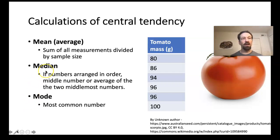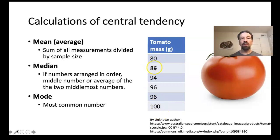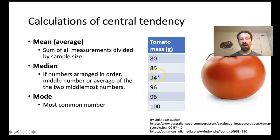The median is the middle-most number. To find it, list all numbers in order from smallest to largest, then cross off pairs of the highest and lowest numbers until one or two numbers remain. If one number remains, that is the median; if two remain, take their average. Here the two middle numbers are 94 and 96, giving a median of 95. The mode is the most common number—in this data set, that is 96, the only number appearing more than once.